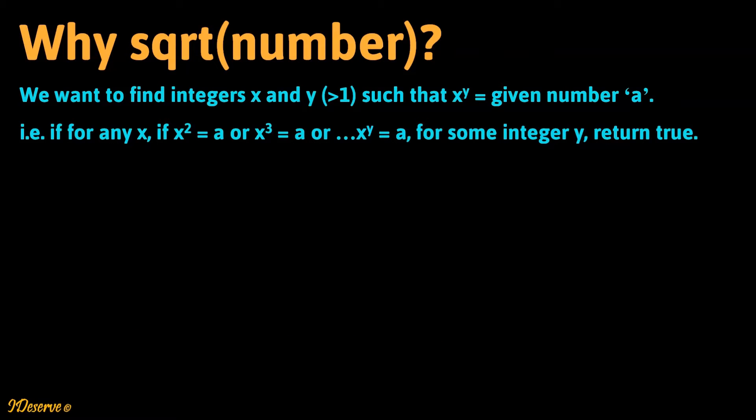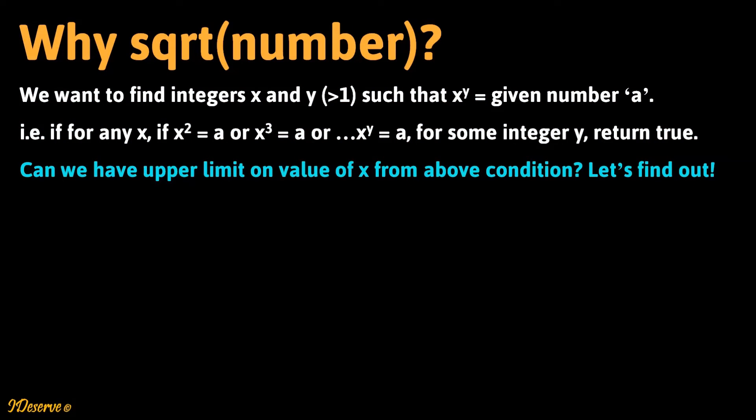Why are we looking at the factors of number only up to square root of number? Let us try to understand this. We want to find integers x and y, y greater than 1, such that x raised to y equals given number a. That is, if for any x, x squared equals a or x cubed equals a or x raised to y equals a for some integer y, return true. Can we have upper limit on value of x from above condition? Let's find out.